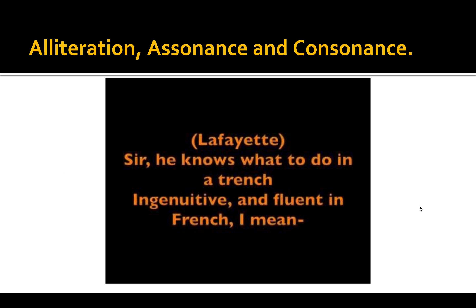Now I want to move on to a song that includes all three of these — alliteration, assonance, and consonance. I want you to just listen and see if you can hear how the poet is using all of them. This is one of my favorite rap songs, from the musical Hamilton. I'll be using a lot of examples from Hamilton because that's the musical in which I learned how to find assonance and consonance, and I learned how important it was.